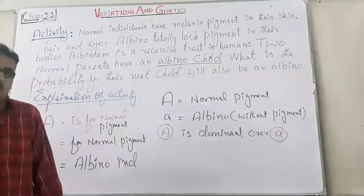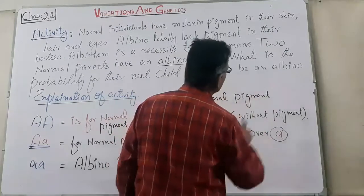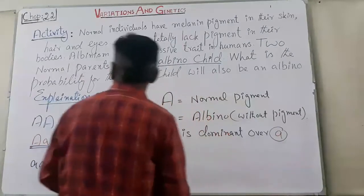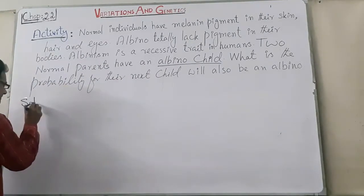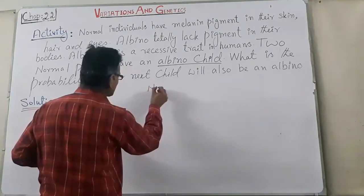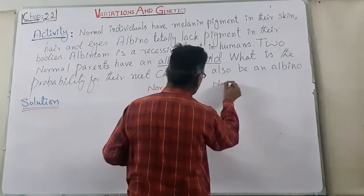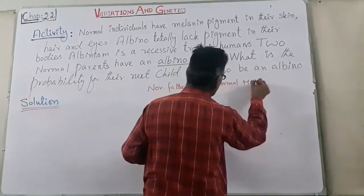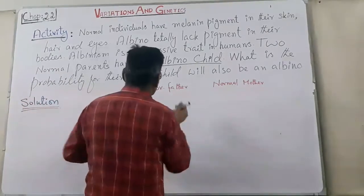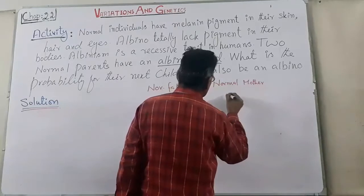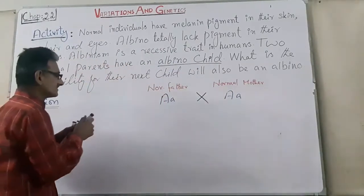This is the explanation of the question. The question asks: what is the probability that their next child will also be an albino? Now we will solve the activity. Solution: normal father and normal mother — but both are heterozygous normal. The father's genotype is capital A small a, and the mother also has capital A small a. We will make a cross between them.